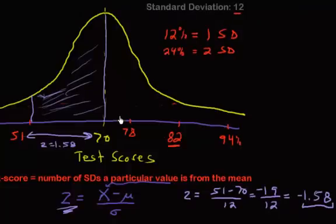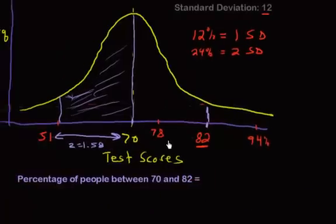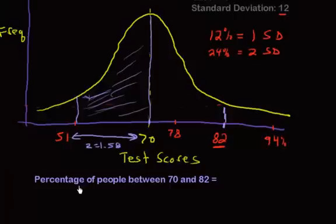Alright, so the percentage of people who scored between a score of 70 and an 82. And we've already checked this, but that was one standard deviation. So the percentage of people between a score of 70 and 82, because that's exactly one standard deviation away, and we saw on the table that that was 34.1%.